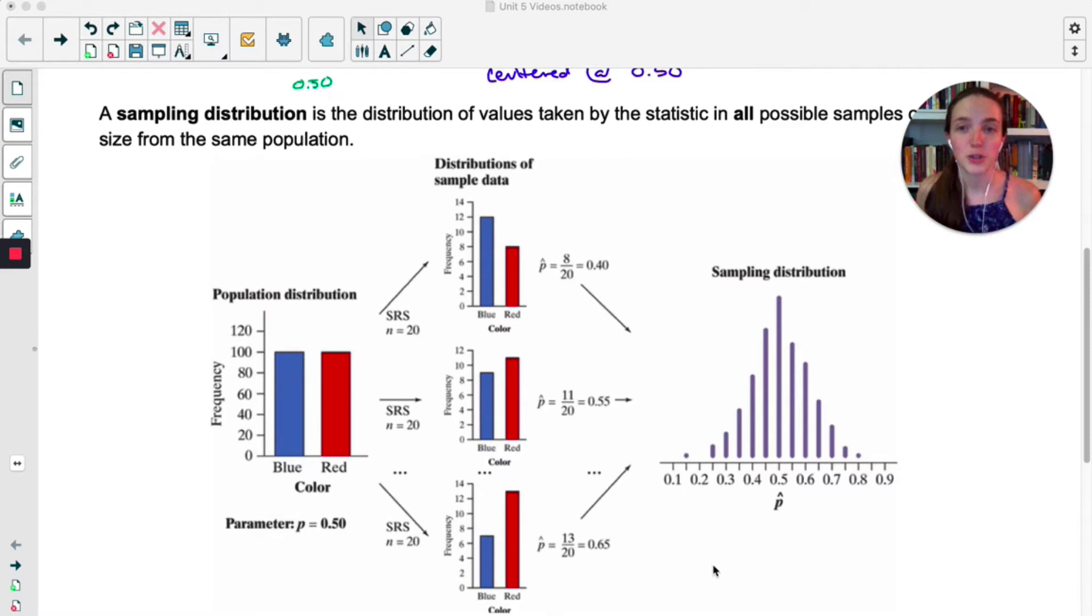Now to get a true sampling distribution, you have to take every single sample of size 20 that is available to you. That means you'd probably have to lay out all the marbles, number them from 1 to 200, use some computer software to come up with every single combination of 20 marbles that you could take and then painstakingly go through one at a time and calculate p hat and all of those. Yeah, that's not something anyone would actually do. We would have a computer do that for us.